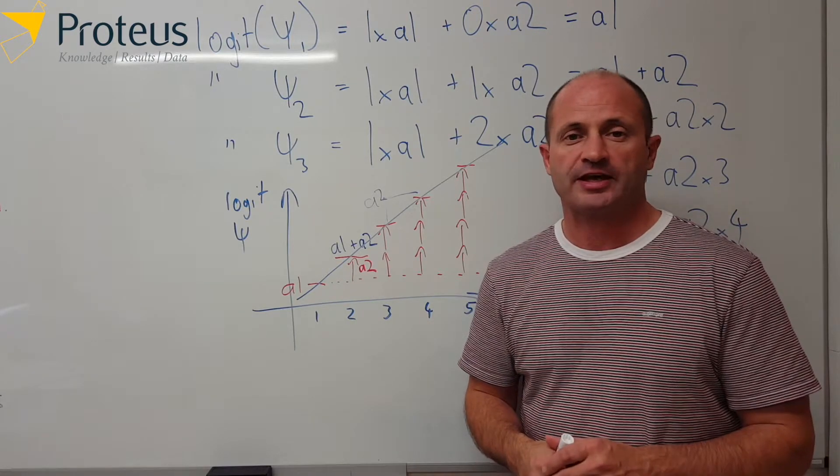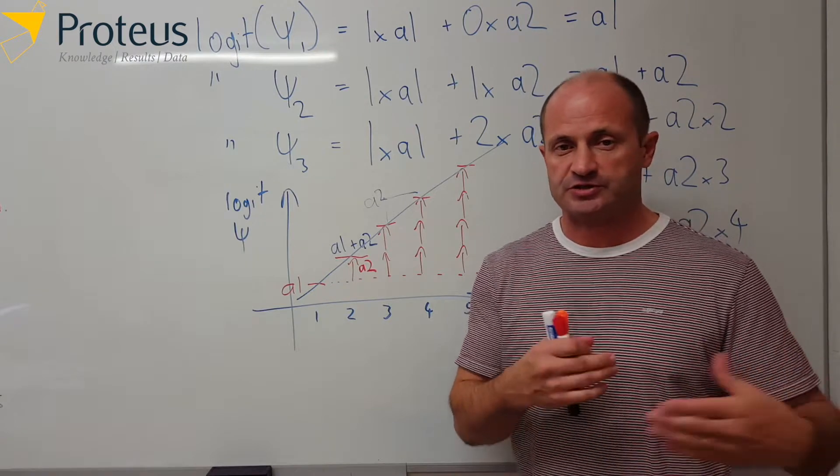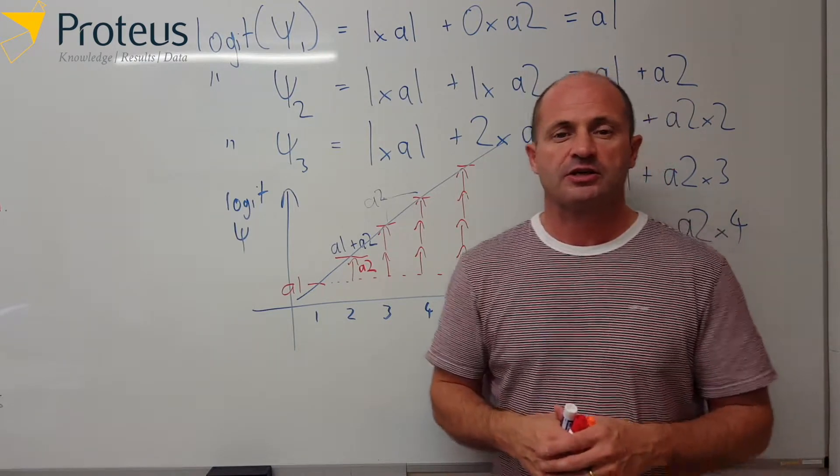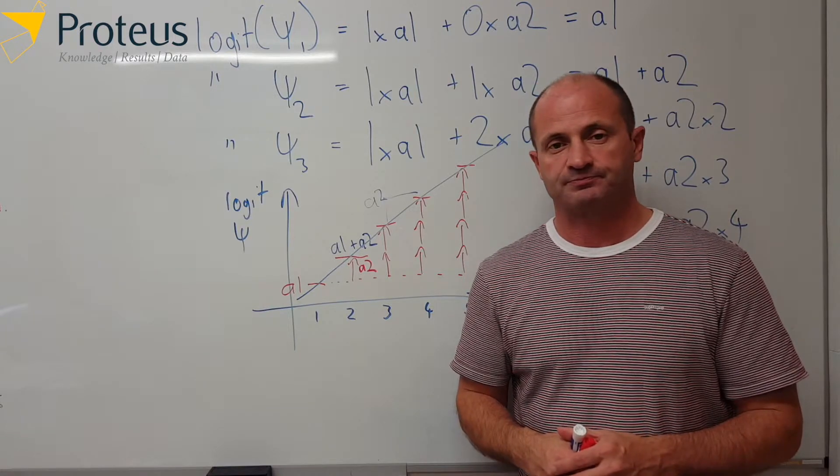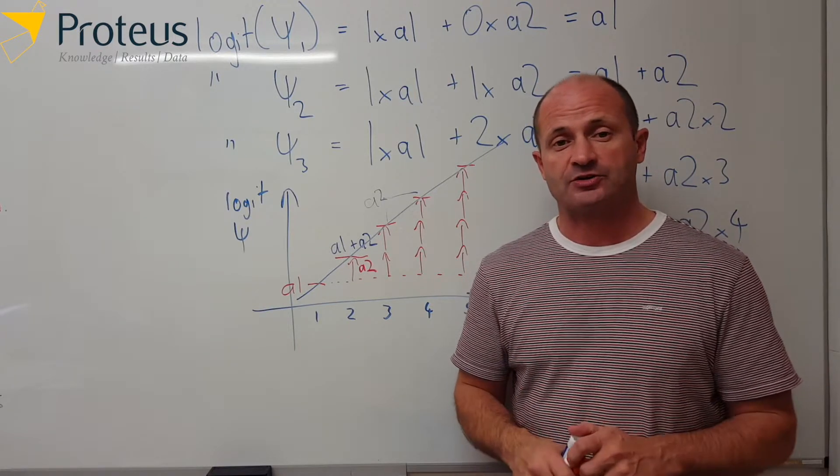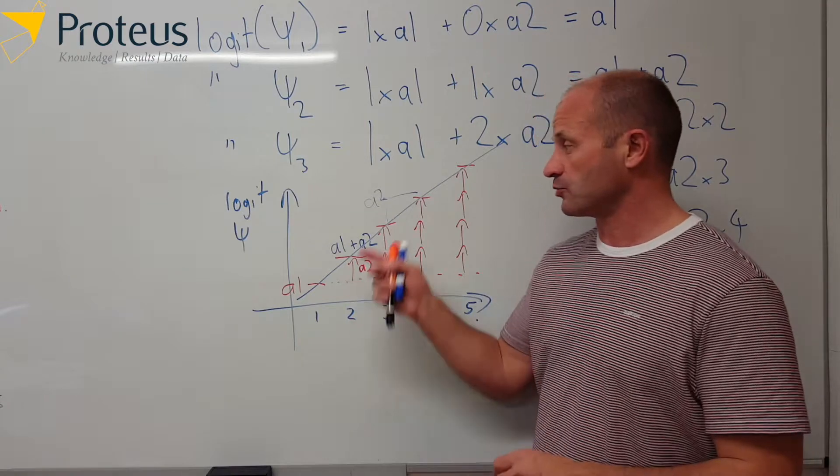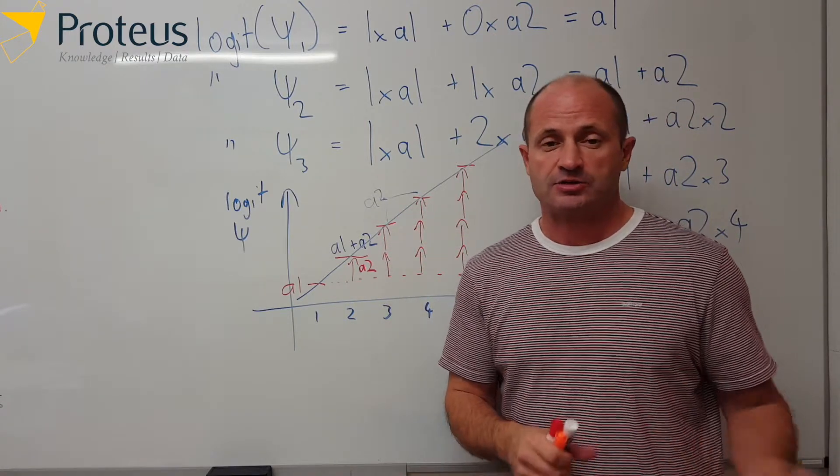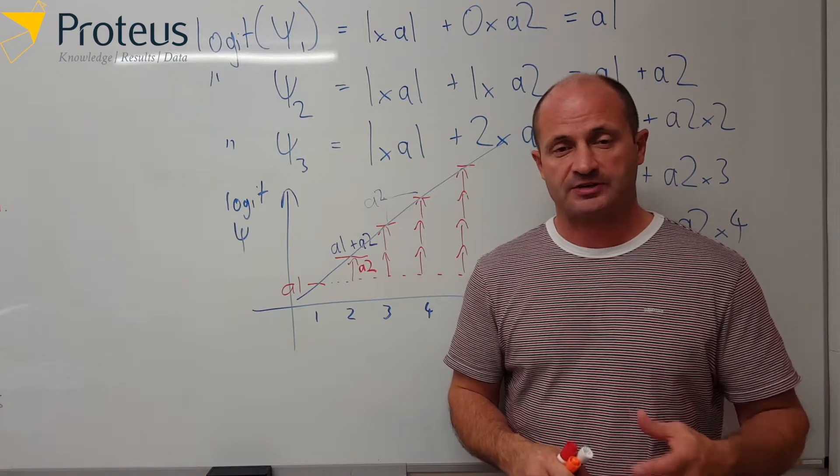And we can look at confidence intervals on that, or we could use it for a series of different models with and without trends and see how they compare and so on and so forth. If you want to look more about how to interpret the results, you know, how would we interpret that a2 parameter perhaps in terms of an odds ratio, you can look at some of the other videos that I've done where we talk about interpretation of coefficients from regression.